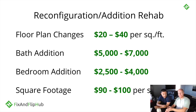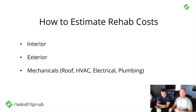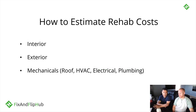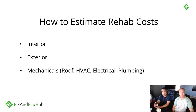You always want to budget on the expensive side — if you come in under, everybody wins. When estimating rehab costs, we like to tackle it in three parts: interior first, then exterior, then mechanicals. The mechanicals are your big ticket items, which include your roof, HVAC, electrical, and plumbing.